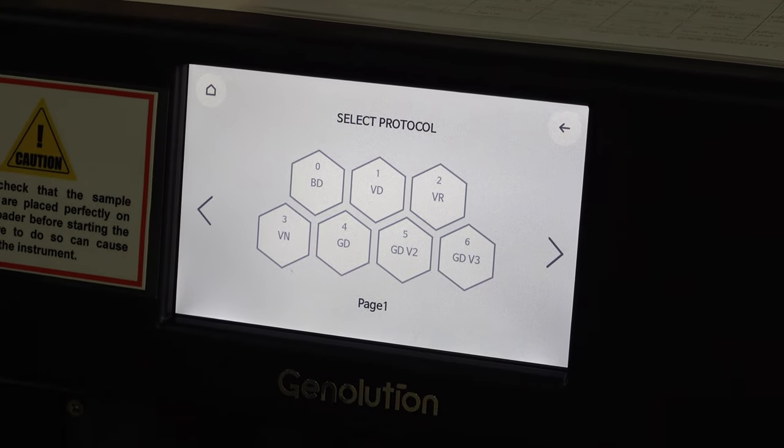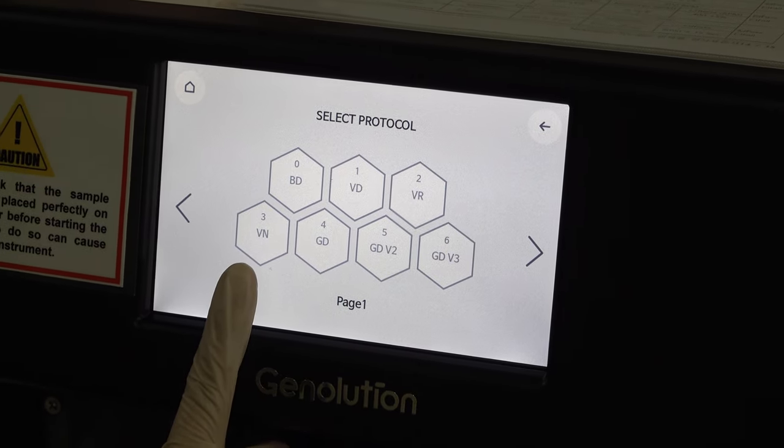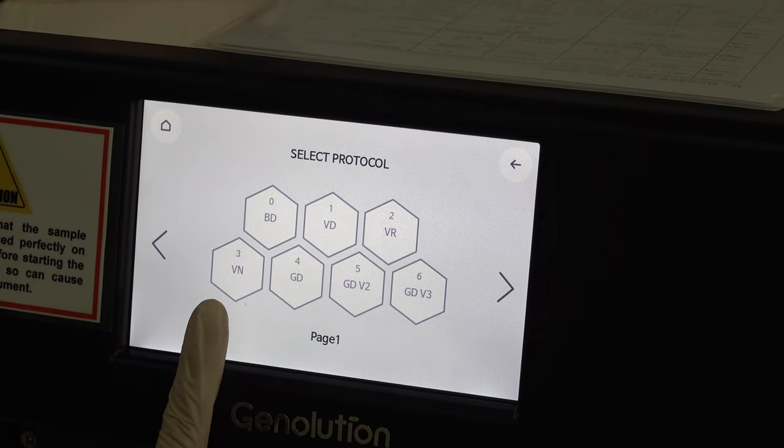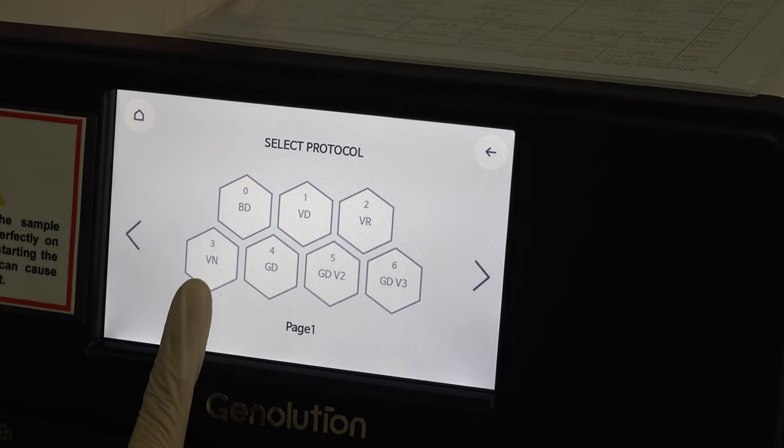Subsequently, the protocol will select the specific kit with the instrument. In this case, we are going to select for viral nucleic acid. That is three. So select three.